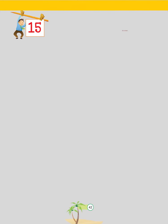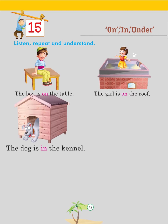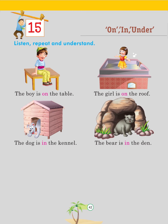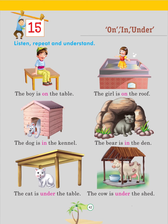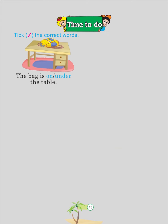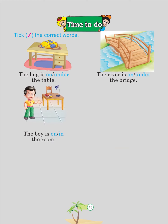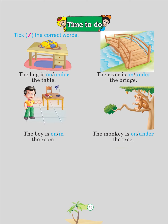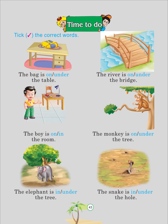Chapter 15: On, In, Under. Listen, repeat and understand: The boy is on the table. The girl is on the roof. The dog is in the kennel. The bear is in the den. The cat is under the table. The cow is under the shed. Time to do — tick the correct words: The bag is on the table. The river is under the bridge. The boy is in the room. The monkey is on the tree. The elephant is under the tree. The snake is in the hole.